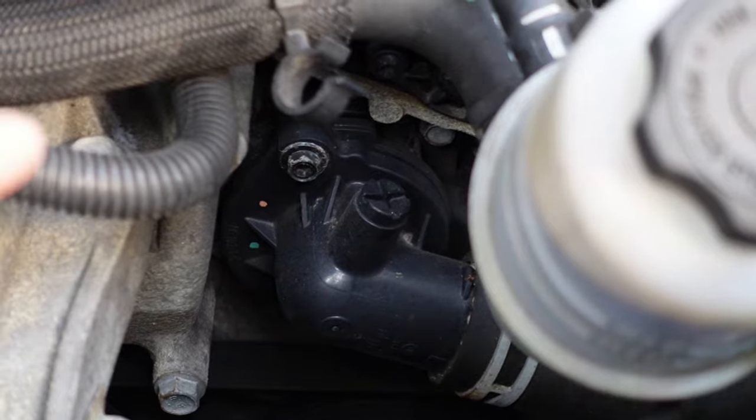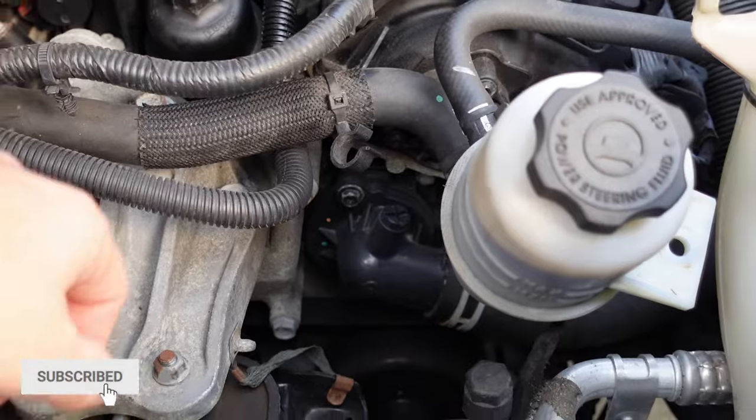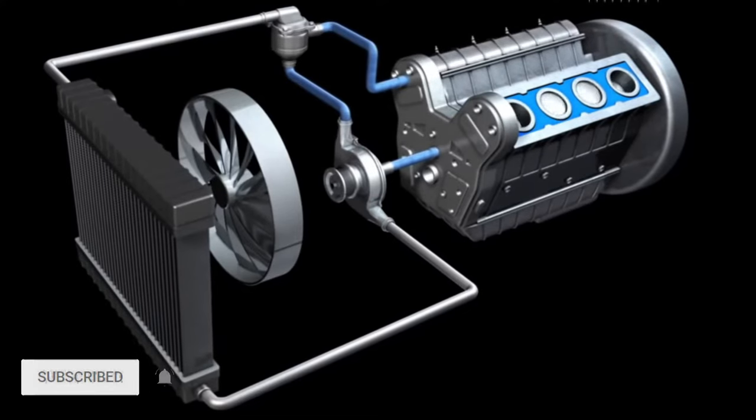The P0128 code basically indicates that the coolant thermostat is faulty when the coolant temperature is below the thermostat regulated temperature for a predetermined period of time.